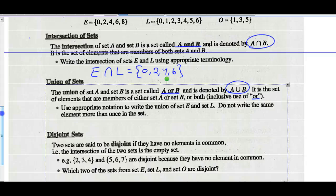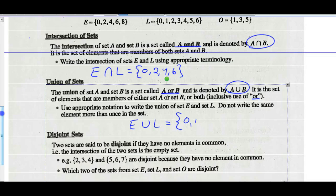Use appropriate notation to write the union of set E and set L. E union L — we don't have to write the same element more than once. Which ones are in E or L or both? So 0, 1, 2, 3, 4, 5, 6. Those are all parts of set L, and set E includes all those as well as the number 8.